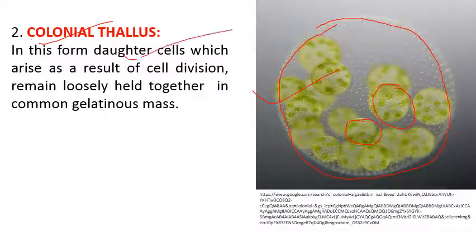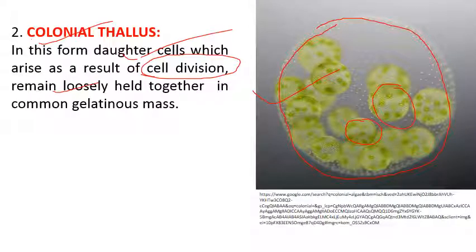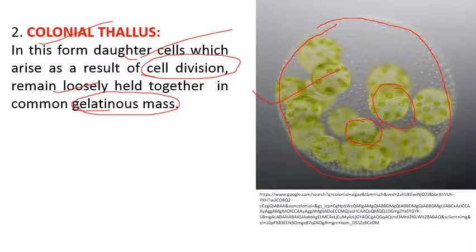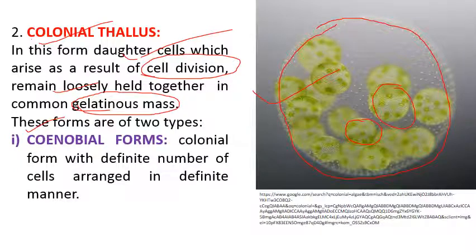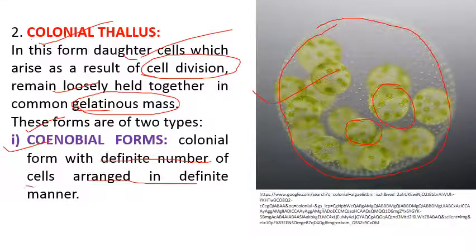In colonial form, daughter cells arising from cell division remain loosely held together inside a gelatinous mass — they are not separated from each other. Colonial forms are of two types. One is coenobial form — colonies with a definite number of cells, arranged in a definite manner to form a particular shape and size. The best example is Volvox. Coenobial forms can be motile or non-motile.